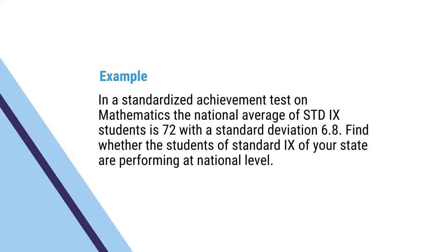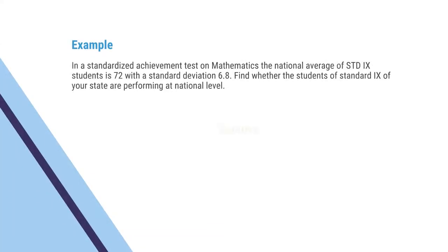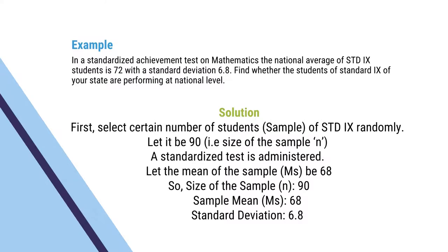To find whether the students of standard 9 of your state are performing at national level, first select a certain number of students — a sample of standard 9 students randomly. Let it be 90. That is, sample size is 90. A standardized test is administered on the sample. Let the mean of the sample be 68.